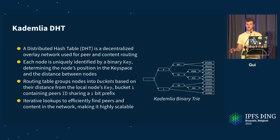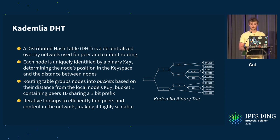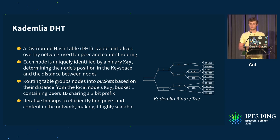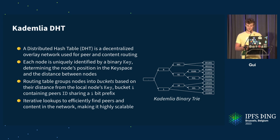This works for both peer routing and content routing. On the right-hand side, you can see an example of a Kademlia binary tree representing the distance. In this example, we have a key space of six bits — that's the right column. A binary tree is a prefix tree and helps determine the distance between nodes.